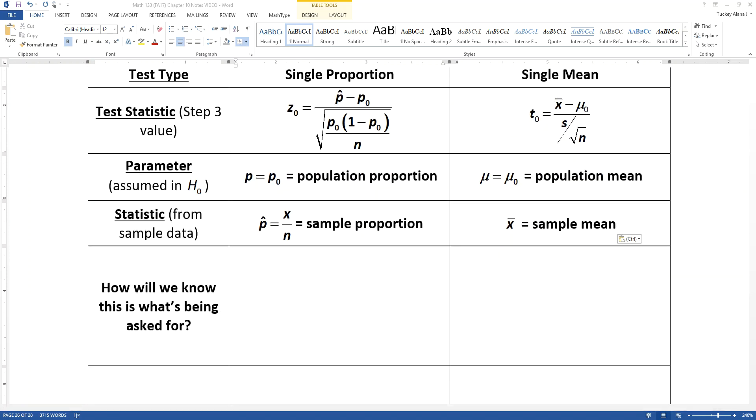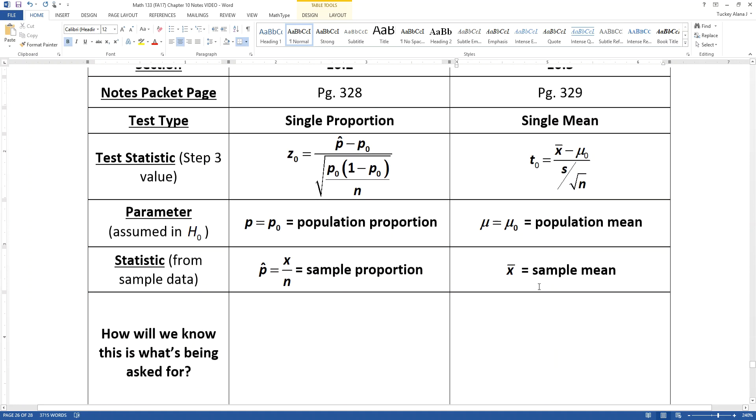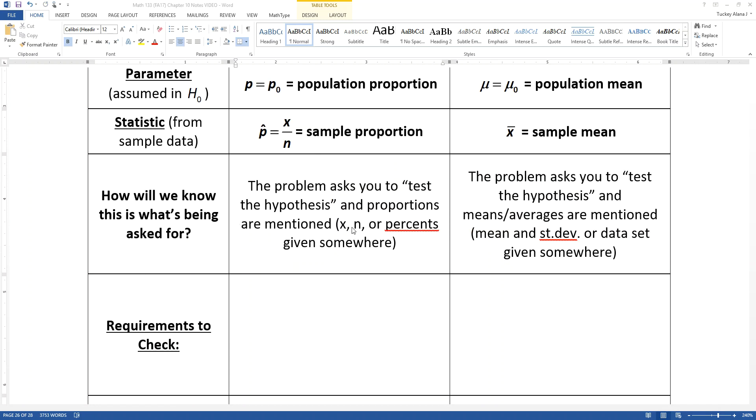How will we know what's being asked for? You're going to have to look for words like test hypothesis, test the value, or test your assumptions. The proportion ones will talk about proportions or have proportions mentioned. The sample mean ones will have the mean and standard deviation mentioned. So proportions or percents given somewhere, or means and averages mentioned, or if they give you a data set, that would be a hypothesis test for the means.